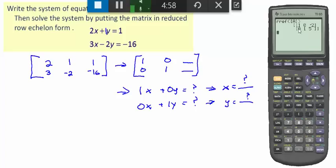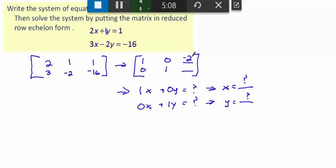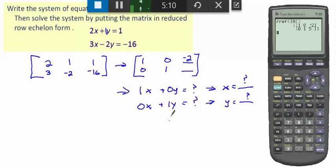Look what we get. We get 1, 0, negative 2, 0, 1, 5. So, 1, 0, negative 2. And then we have 0, 1, and 5.